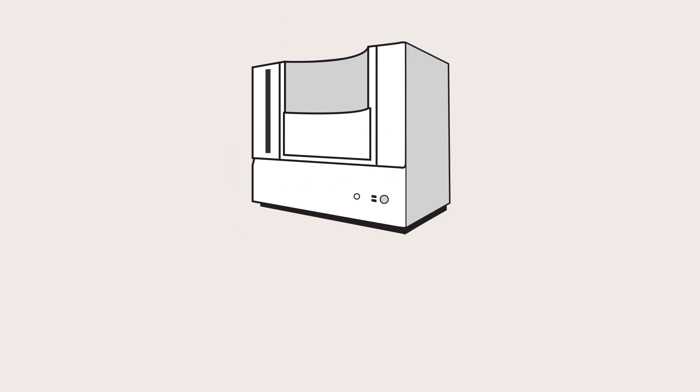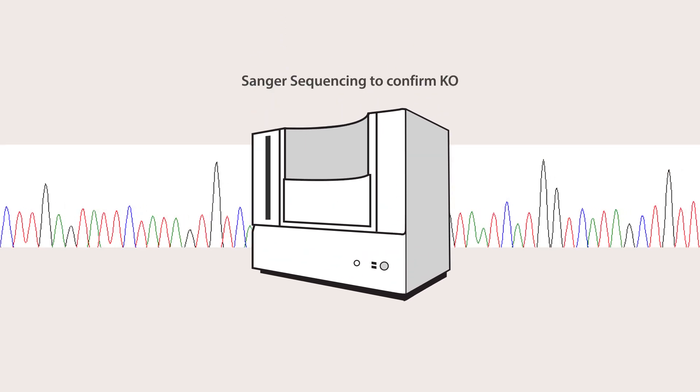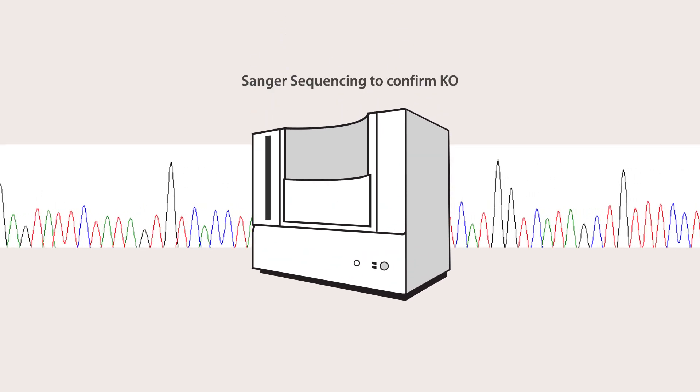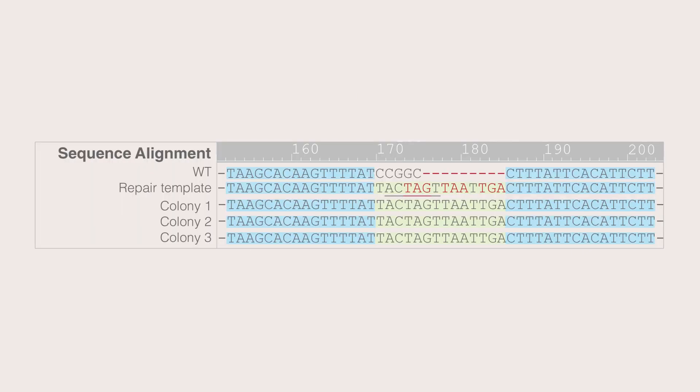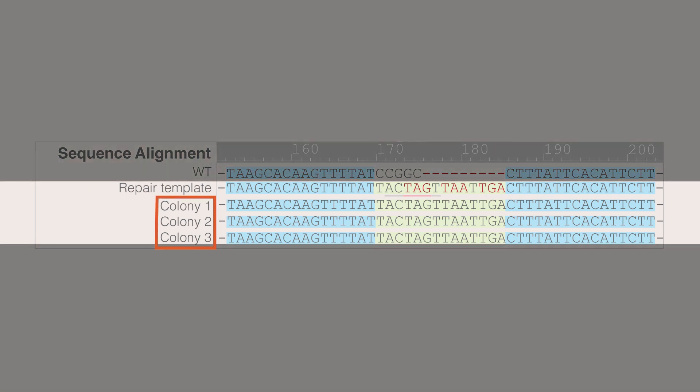Finally, PCR products from positive clones are subjected to Sanger sequencing to confirm correct repair template insertion and knockout of the CAT gene. In this example, the sequence alignment shows that colonies 1, 2, and 3 have the correct knockout insertion sequence containing three stop codons and the SPE-1 restriction site.